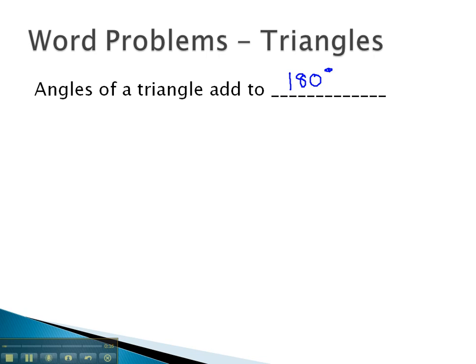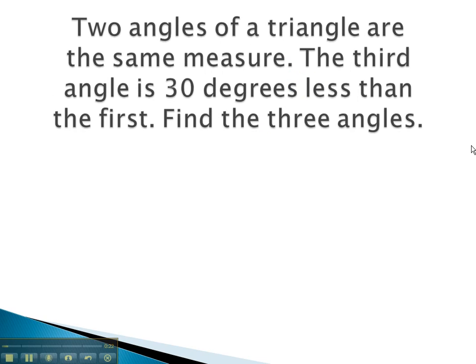Let's take a look at some examples where knowing this fact can help us find missing angles in the triangle. In this problem, we are given information about the three angles. Let's label them as first, second, and third.